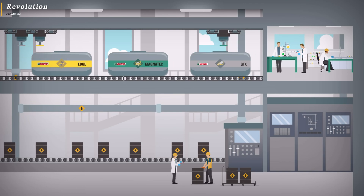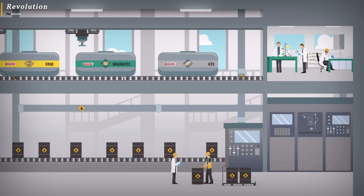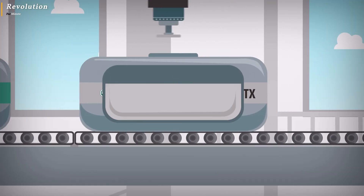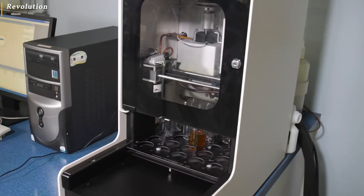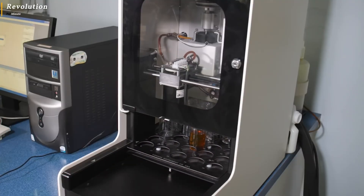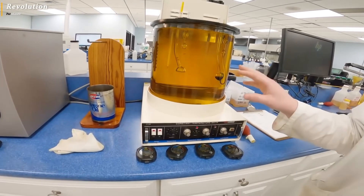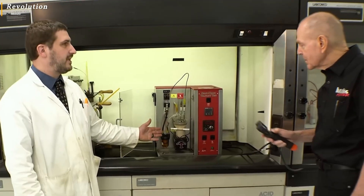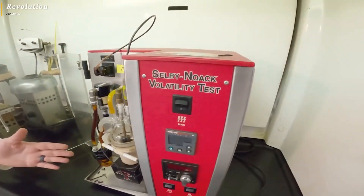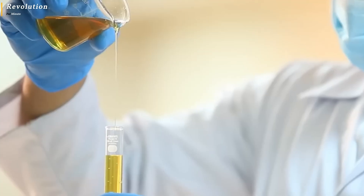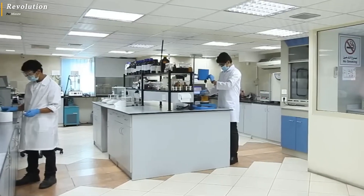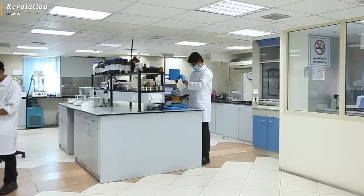Anti-corrosion agents protect engine components from rust. In addition, anti-wear agents serve to reduce wear and tear on engine parts. All these additives are carefully blended according to the designed formula, ensuring that every drop of oil provides optimal quality and protection.